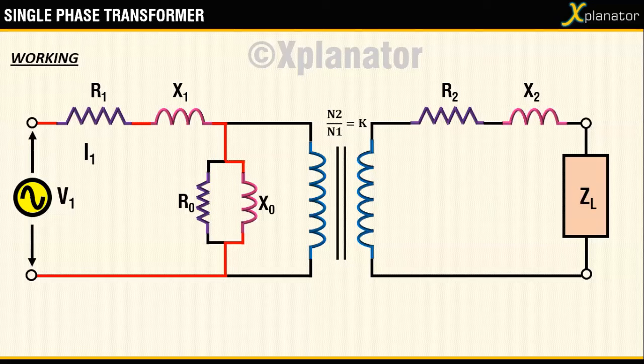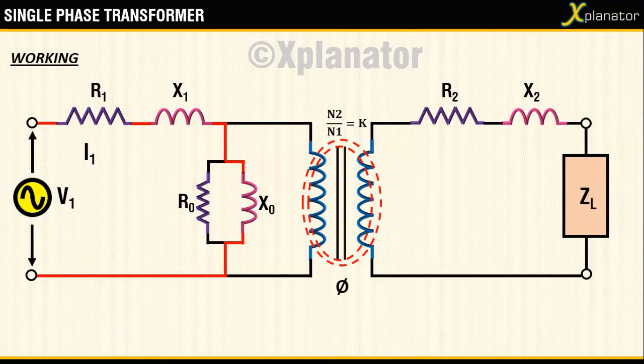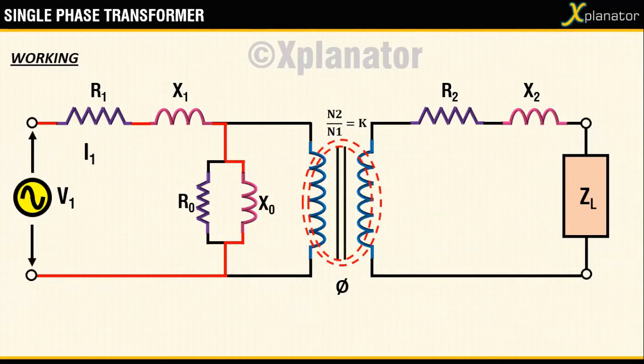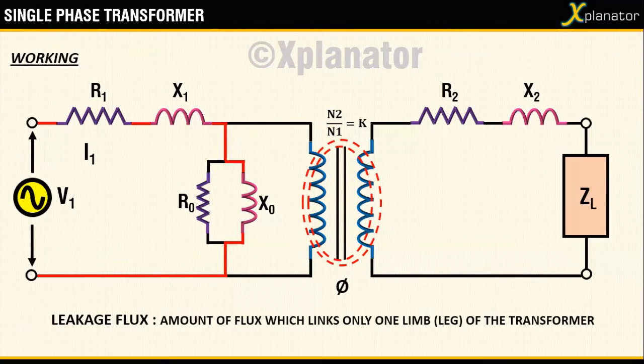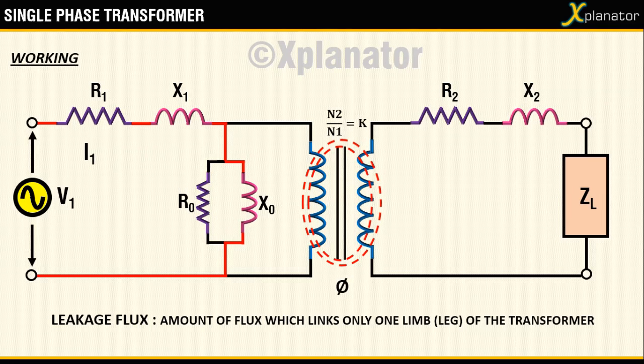This current I1 goes into the winding to create magnetic flux phi in the core. Not all of this flux is utilized completely. A small portion of the flux will link either of the windings but not both. This portion of flux is called as leakage flux. That is the amount of flux which links only one limb or leg of the transformer.